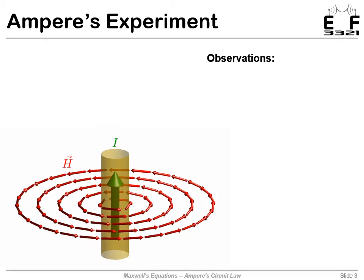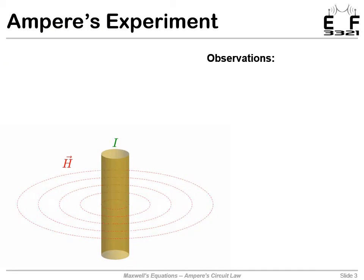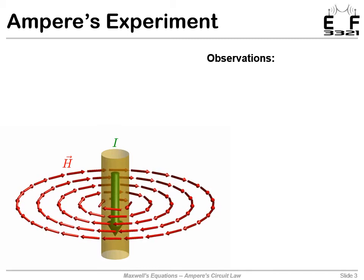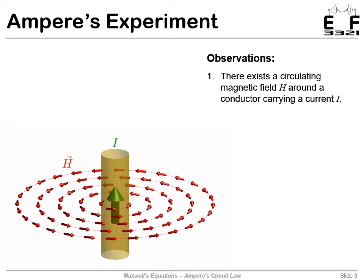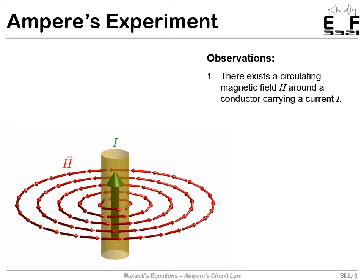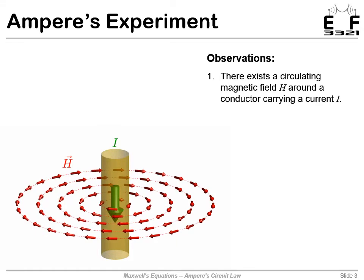We start with Ampere's experiment, and at a high level, we see magnetic fields circulating around moving charges. In this case, we have a wire passing a current, and we can observe a magnetic field around that.